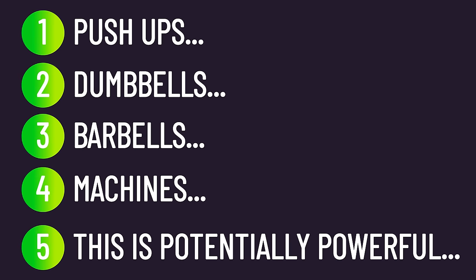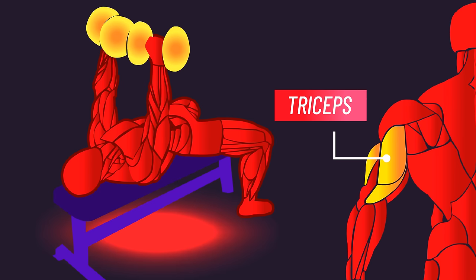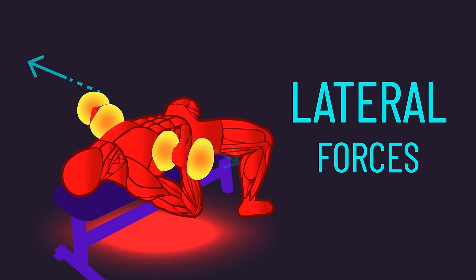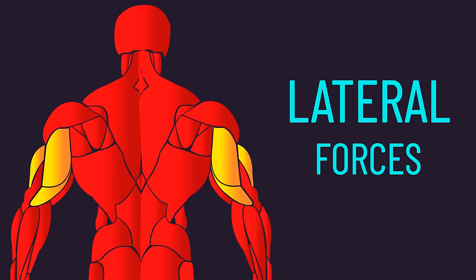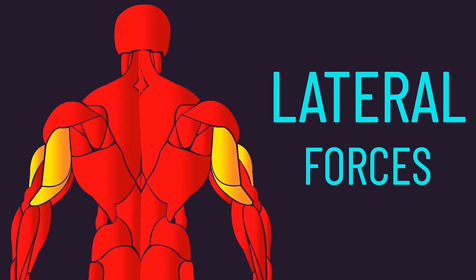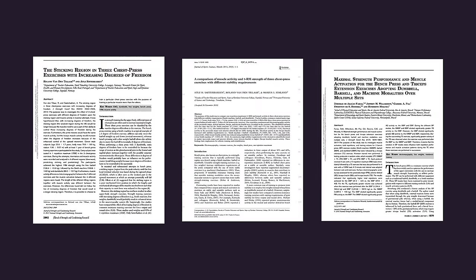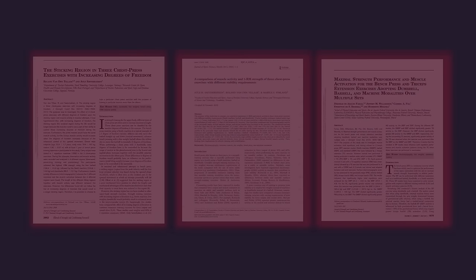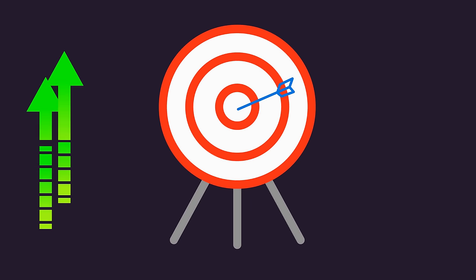The second consideration relates to dumbbell bench pressing. When analyzing them, the triceps are likely trained slightly less compared to all other variations. The likely reason is you can't apply much lateral forces during a dumbbell bench press — doing so would just result in the dumbbells falling to either side of you. This matters as the triceps are involved in generating lateral forces. With all other variations, lateral forces naturally occur whether you know it or not. Electromyographic data confirms reduced triceps activity with dumbbells compared to a barbell bench press.